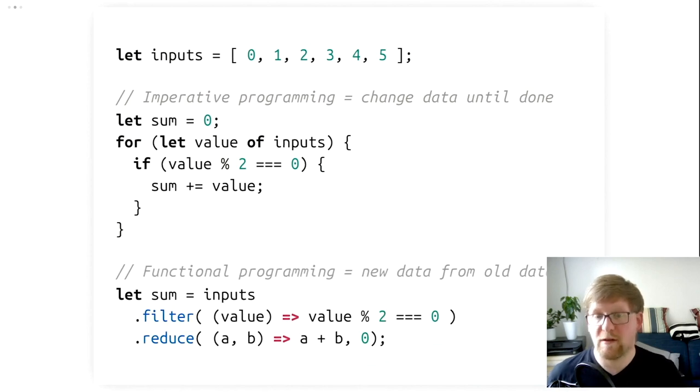But there's also another approach, the functional approach. Functional programming deals with functions, but the most important bit is how we treat data. In this case, new data comes from old data. We describe functions that transform our old data, our inputs, our numbers, into new data, in this case our sum. We do this by first filtering out all the non-even values and then taking the remaining values and then summing them up.